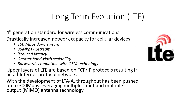Long-term evolution, otherwise known as LTE or fourth generation, is a standard for wireless communication. The introduction of LTE drastically increased network capacity for cellular devices. LTE offers up to 100 megabit speeds downstream and 30 megabits upstream, with reduced latency, greater bandwidth scalability, and is backwards compatible with GSM technology. The upper layers of LTE are based on TCP/IP protocols, resulting in an all-internet protocol network. With the development of LTE-A, throughput has been pushed up to 300 megabits per second leveraging multiple input and multiple output (MIMO) antenna technology.